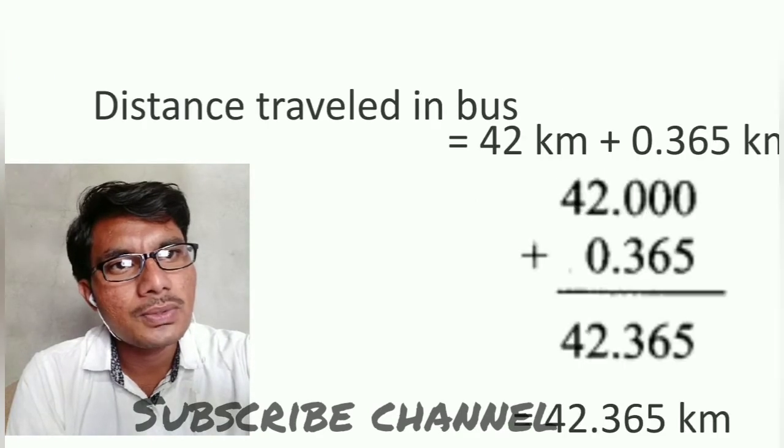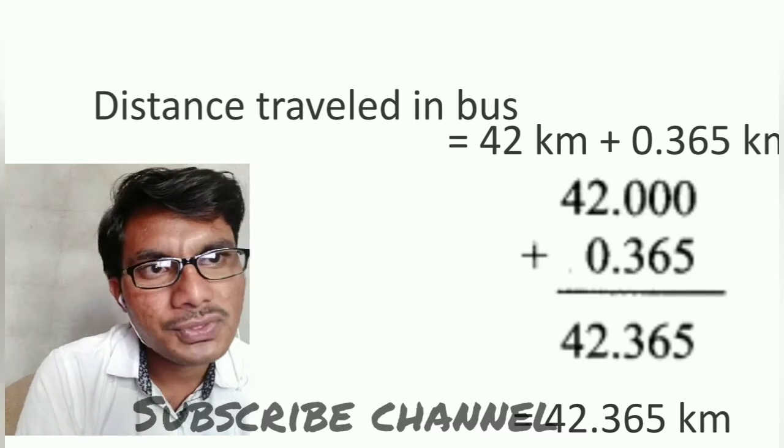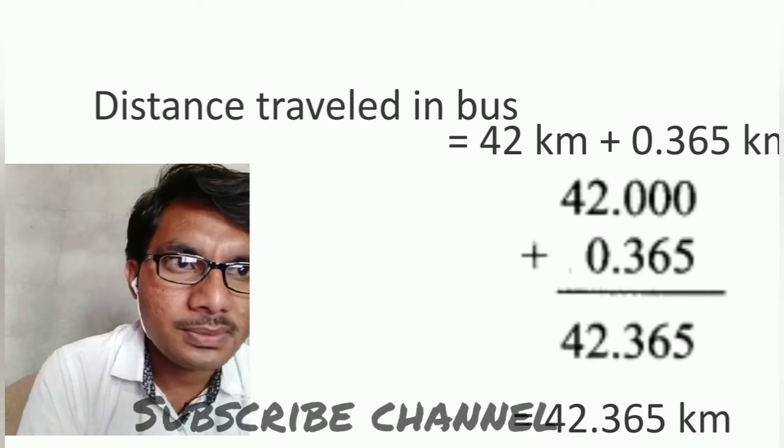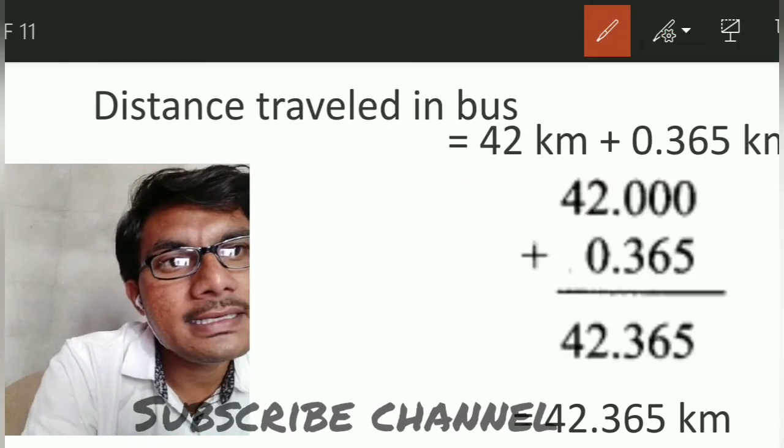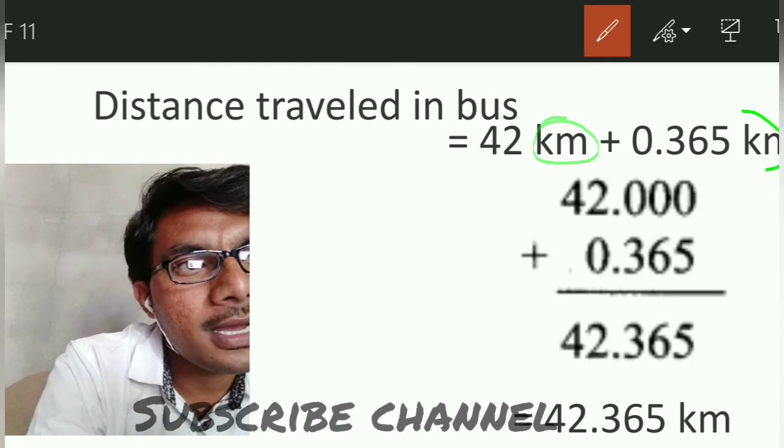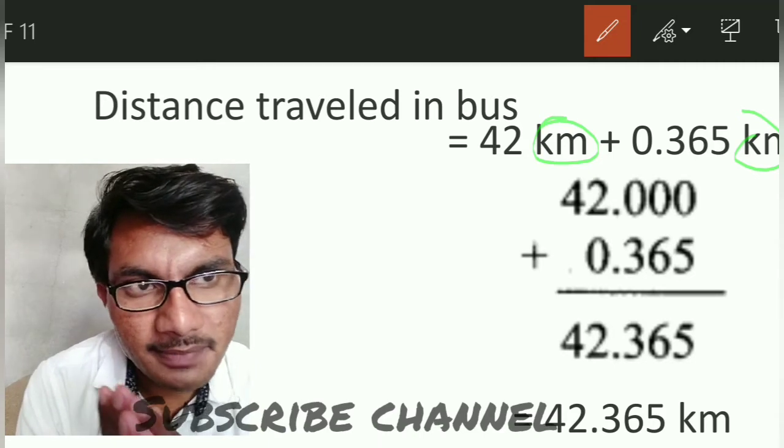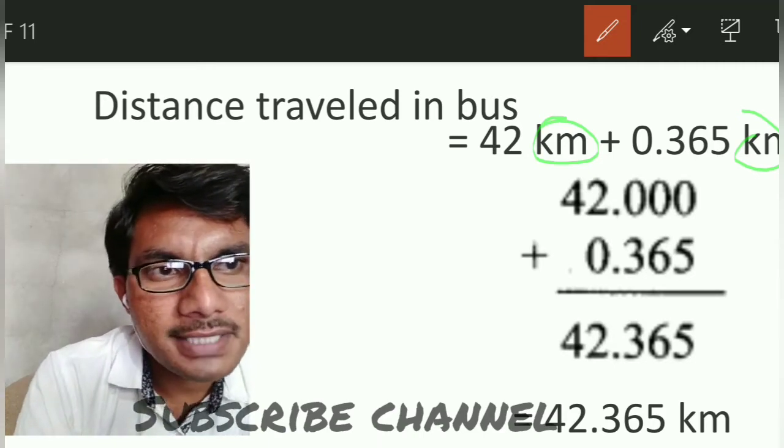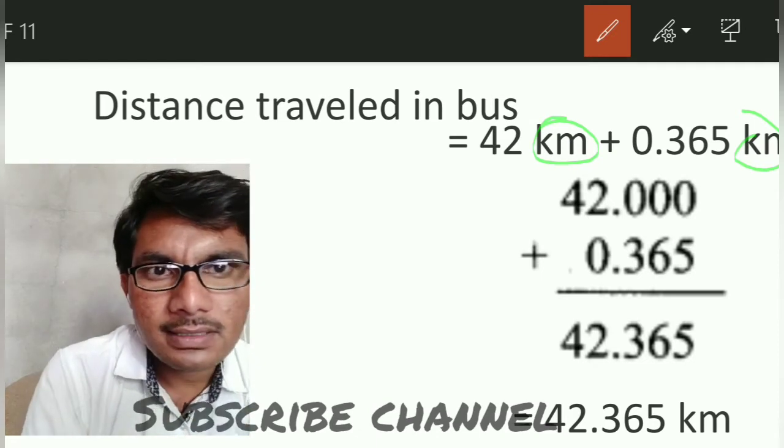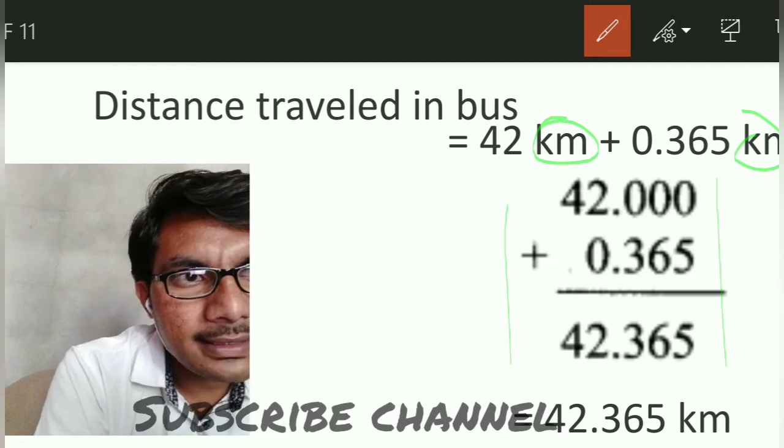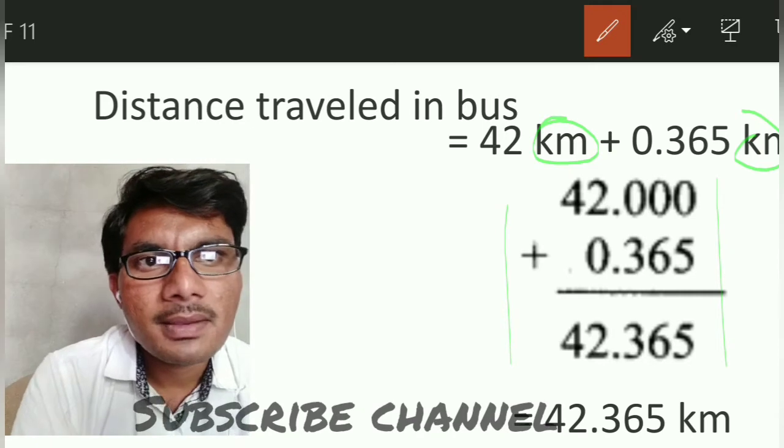Now we have both distances for the bus in kilometers: 42 kilometers and 0.365 kilometers. If both units are the same, we can add them. Adding these two, we get 42.365 kilometers. Total distance traveled by bus is 42.365 kilometers.